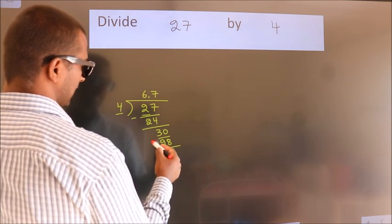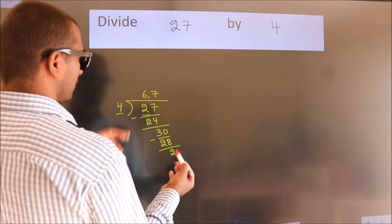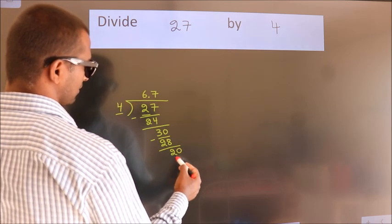Now, we subtract. We get 2. After this, we already have the decimal, so directly take 0. So, 20.